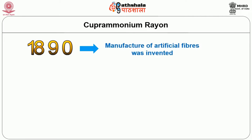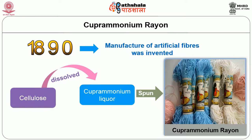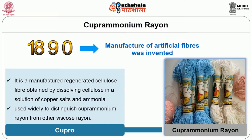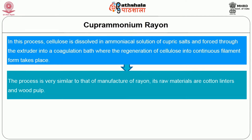Cupramonium Rayon. In 1890, a new method for the manufacture of artificial fiber was invented. The cellulose could be dissolved in a cupramonium liquid and spun into fibers. This fiber was called cupramonium rayon. Cupramonium rayon is also known as cupro. It is a manufactured regenerated cellulose fiber obtained by dissolving cellulose in a solution of copper salt and ammonia. Cupro is now used widely to distinguish cupramonium rayon from other viscose rayon. In this process, cellulose is dissolved in ammoniacal solutions of cupric salts and forced through the extruder into a coagulation bath, where the regeneration of cellulose into continuous filament form takes place. The process is very similar to that of the manufacture of rayon.